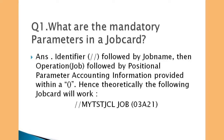Theoretically, the job card works as follows: first the identifiers, then the job name which can be up to eight characters long, then the operation name which is JOB, then within parentheses the accounting info. Accounting information is a mandatory positional parameter; the other one is the programmer's name, but you can skip it. Keyword parameters in the job card are all optional.